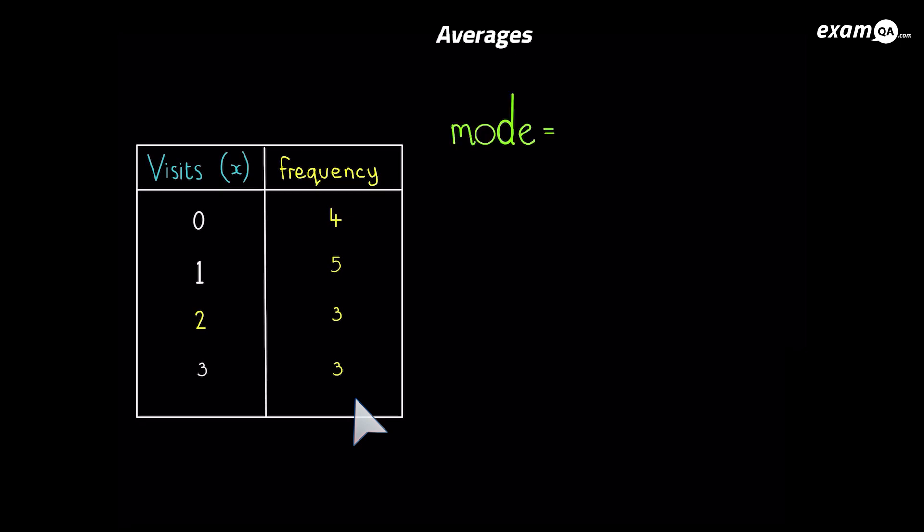So let's work out the mode. So remember mode is the most frequent number. And you can see the highest frequency is five. So one is the mode, one is the most common number of visits to the gym every month. So the mode you just choose the number which has the highest frequency.